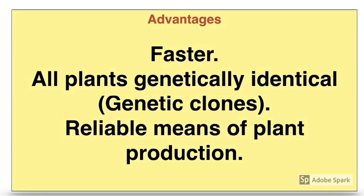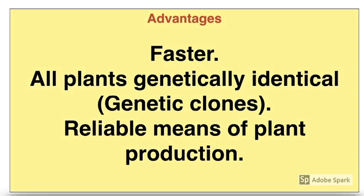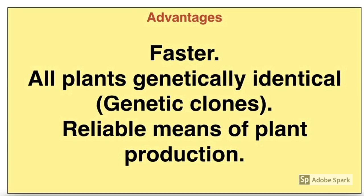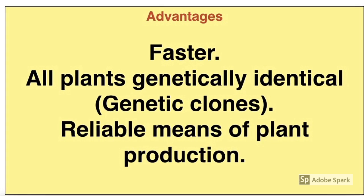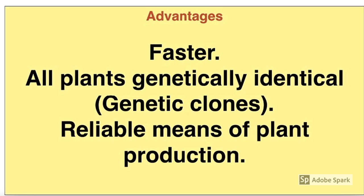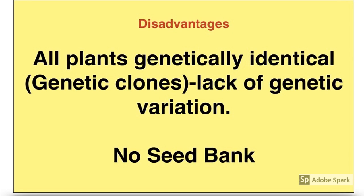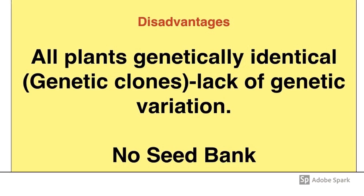Vegetative propagation, both natural and artificial, is faster than sexual reproduction in plants. All plants produced are genetically identical to the parents — they are genetic clones — which is beneficial if they have favourable traits. It is also a very reliable means of plant reproduction. Disadvantages include the lack of genetic variation and the absence of a seed bank.